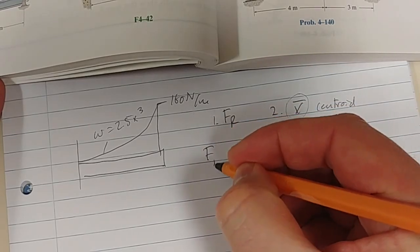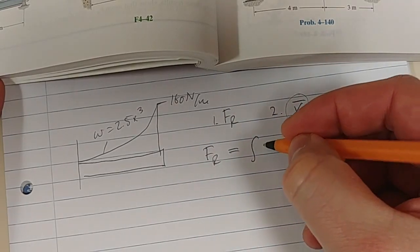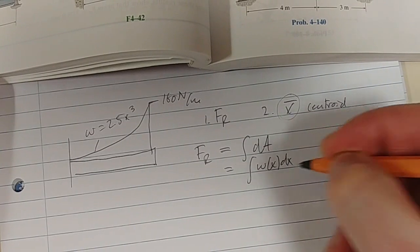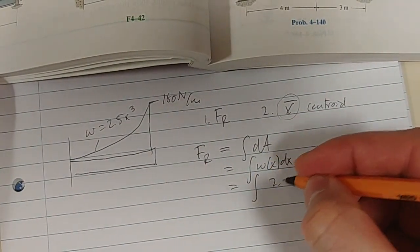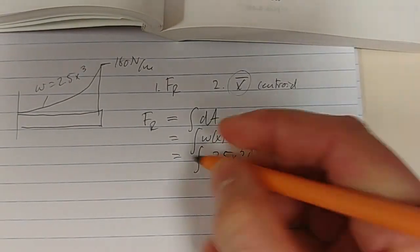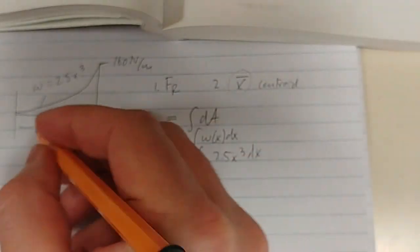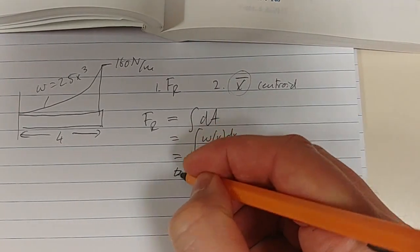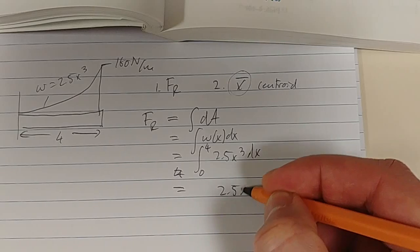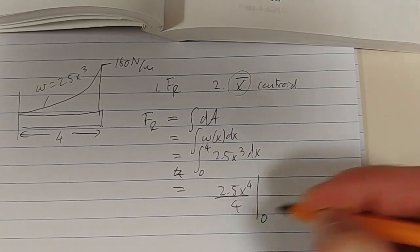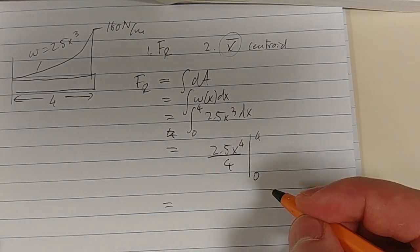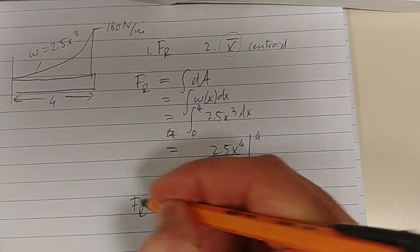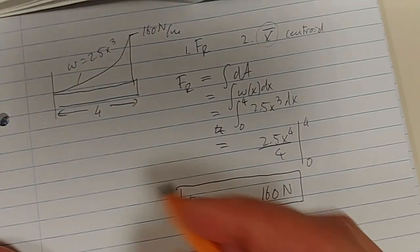How do we determine FR? It is simply the area under the curve, the integral of dA. We know that equals ∫W(x)dx which equals ∫2.5x³dx. We also notice that this length is four meters, so it's between zero and four. Let's integrate that: 2.5x⁴/4 between zero and four, and what do we get here? I think this is 160 if I'm not mistaken, and that's Newtons. So your resultant force is 160 Newtons.